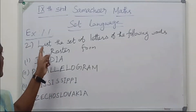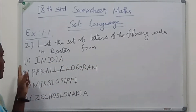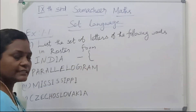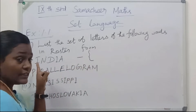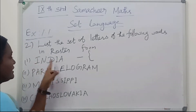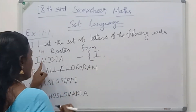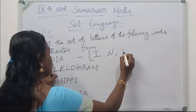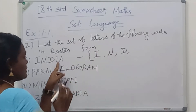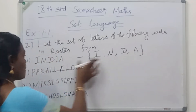See the 2nd question: list the set of letters of the following words in roster form. For the 1st word, 'India', we write the elements directly inside curly brackets, and an element should not repeat inside the set notation. The letters are: I, N, D — the 4th letter I is already written so we leave it — and A. So the roster form is {I, N, D, A}.